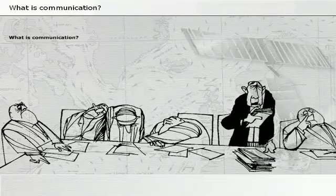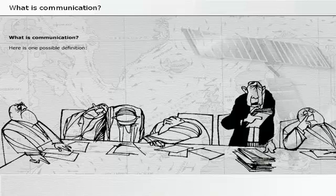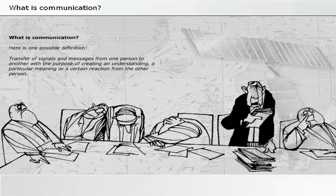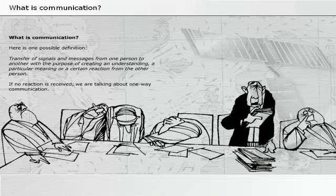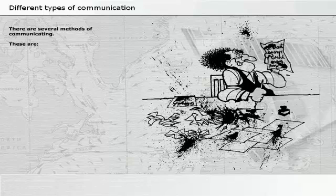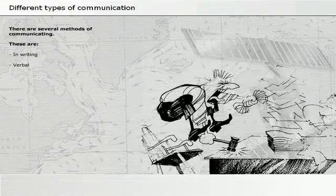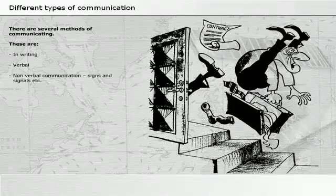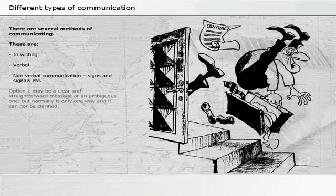What is communication? Here is one possible definition: transfer of signals and messages from one person to another with the purpose of creating an understanding, a particular meaning, or a certain reaction from the other person. If no reaction is received, we are talking about one-way communication. There are several methods of communicating: writing, verbal, nonverbal communication, signs and signals, etc. A message may be clear and straightforward or ambiguous, but normally it is only one way and cannot be clarified.